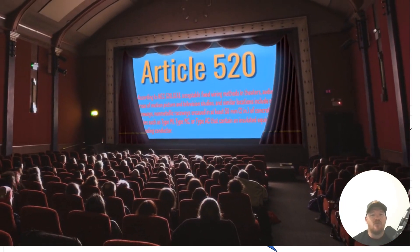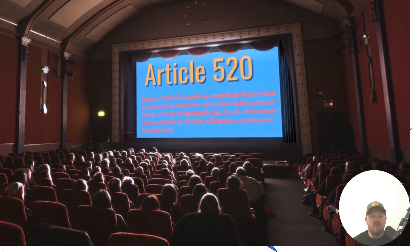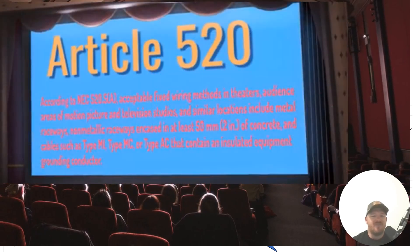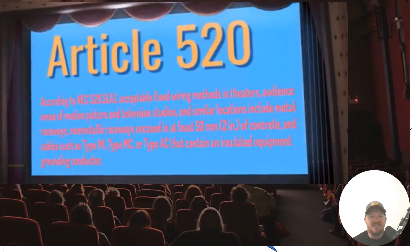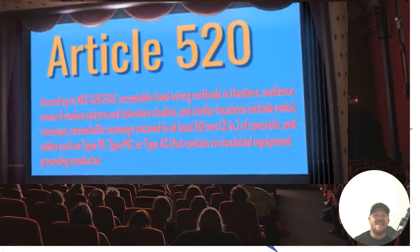Today we're heading to Article 520 for the answer to our question. In 520.5A, acceptable fixed wiring methods in theaters, audience areas of motion picture and television studios, and similar locations include metal raceways, non-metallic raceways encased in at least 2 inches of concrete, and cables such as MI, MC, and type AC that contain an insulated equipment grounding conductor.